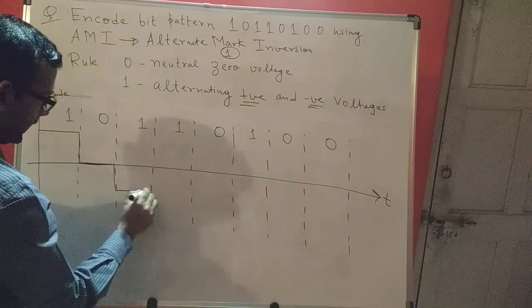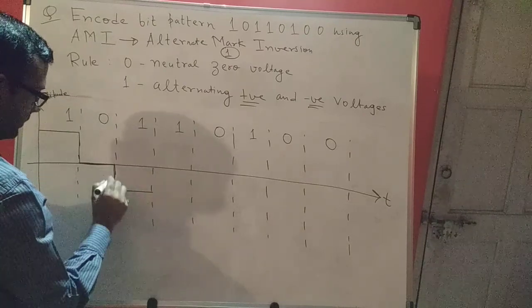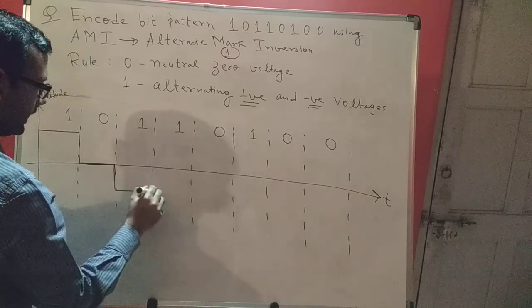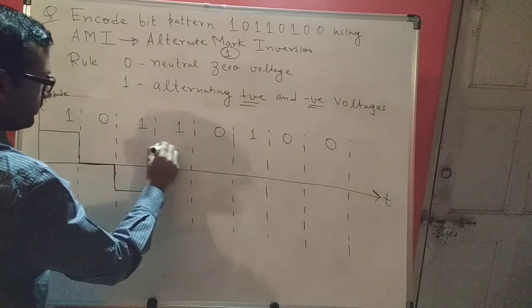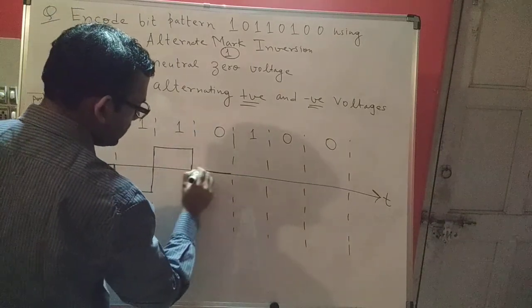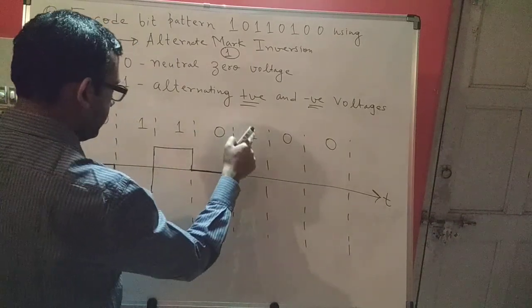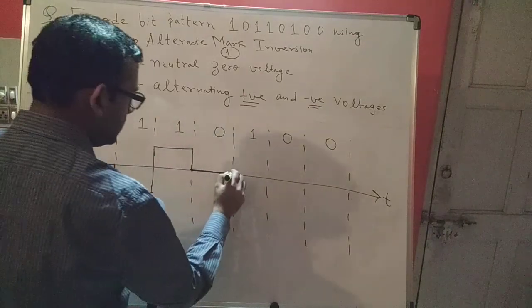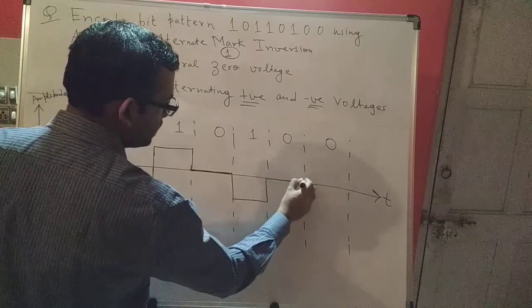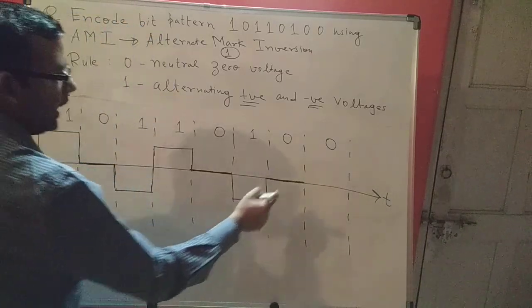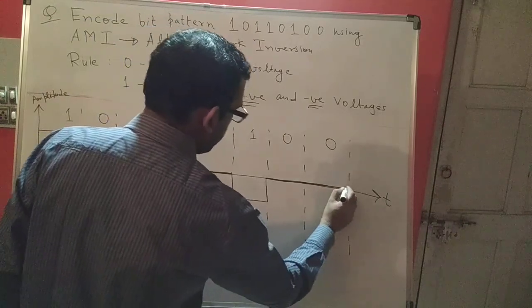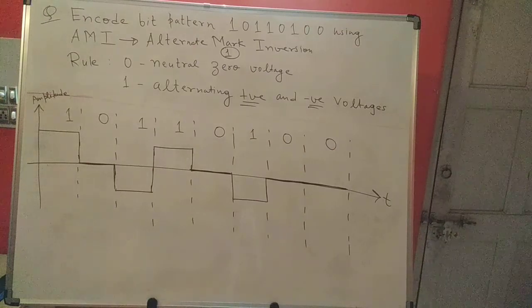I'll get a negative voltage for my one, and then again I have a one — since I'm at negative, I'll go back up and represent positive. I get a zero, which represents zero voltage along the time axis. I get a one — the previous one was positive, so this will be negative. Then zero represents zero voltage along the time axis, and again there is a zero, which also represents zero voltage along the time axis. This is how you encode your bit pattern using AMI.